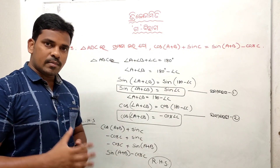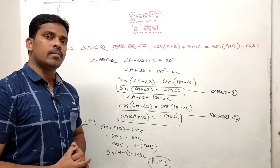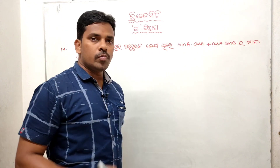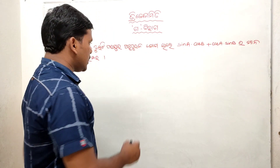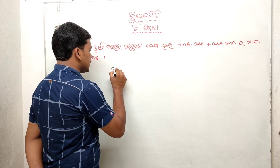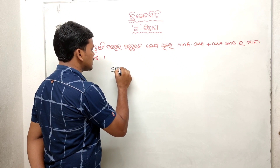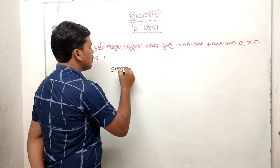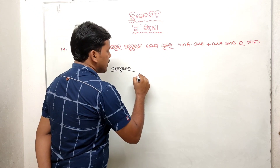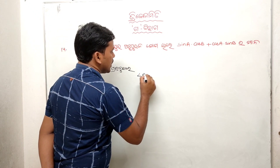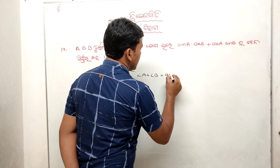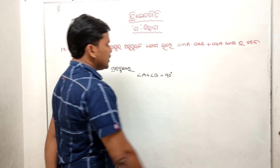Problem number 14: Two lines OA and OB are mutually perpendicular to each other, meaning the angle between them is 90 degrees. We need to prove that sin A into cos B plus cos A into sin B equals 1.